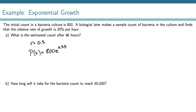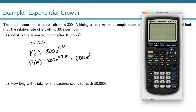For the estimated count after 10 hours, we just plug in t = 10. So we have 800 times e to the 0.3 times 10, or 800 times e to the 3. Since we're talking about bacteria count, we need to round to the nearest whole number, so that's 16,068.